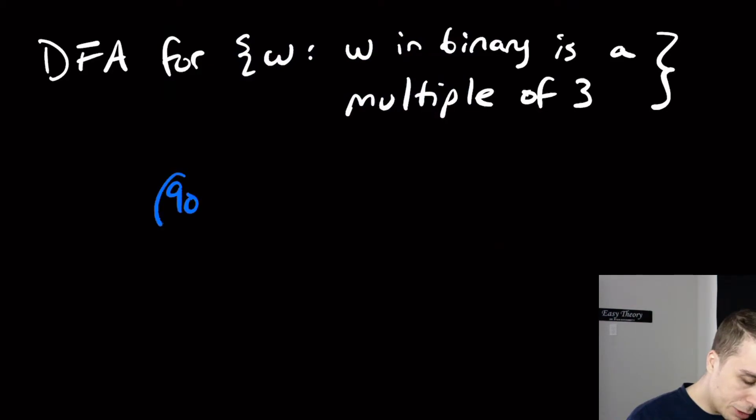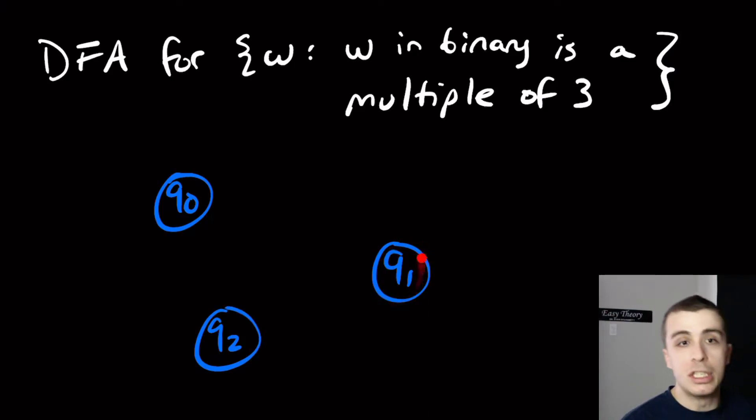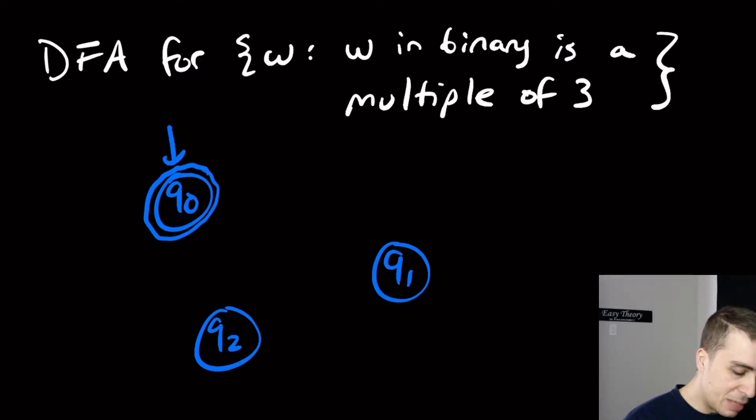So q0, which represents strings that are a multiple of 3, q1, which is if you divide by 3, it's a remainder of 1, remainder of 2 for here. So this state obviously should be an accept state because if it has a remainder of 0, that means it is a multiple of 3.